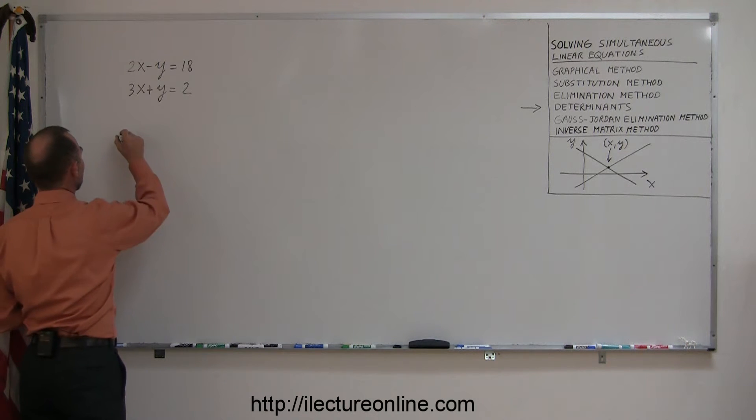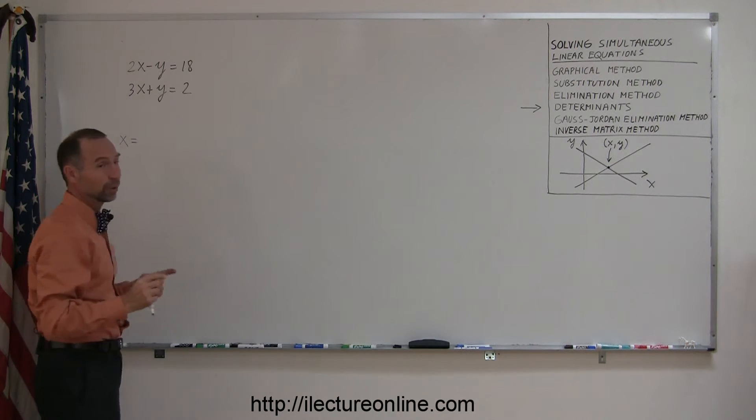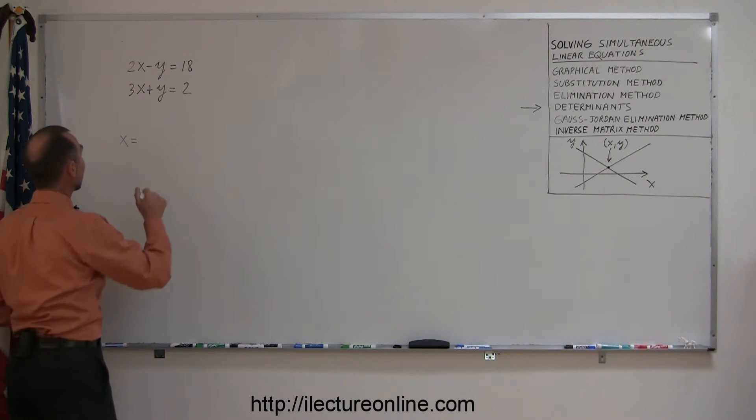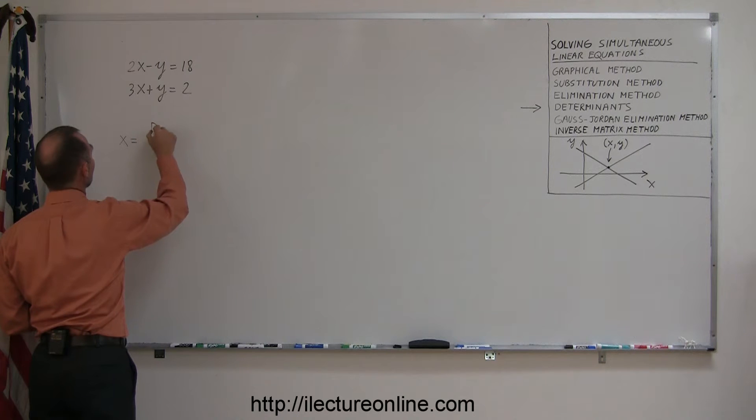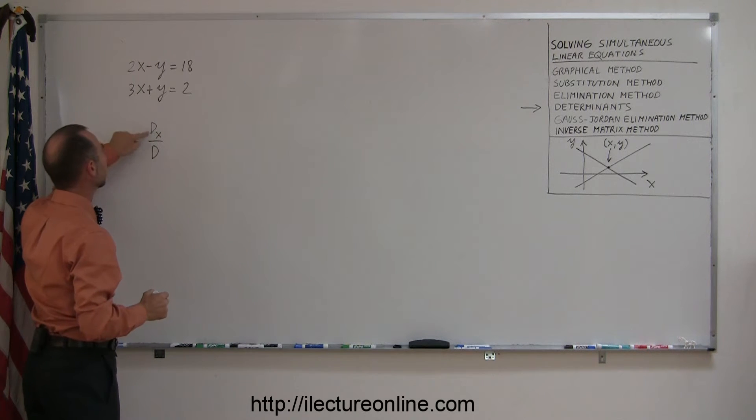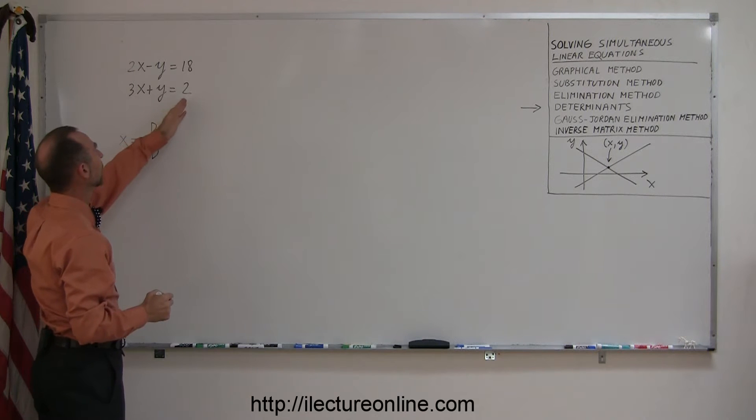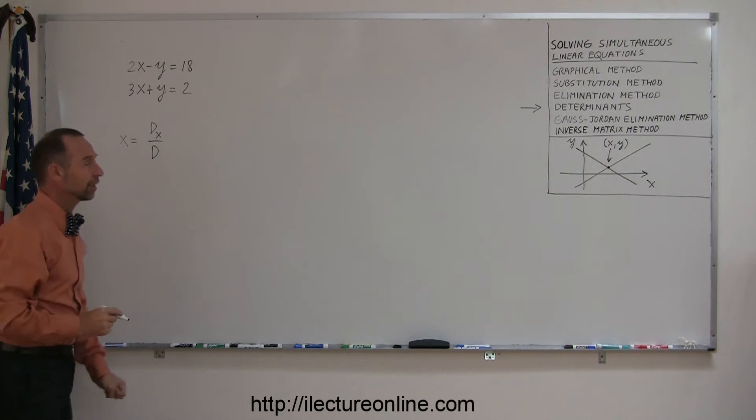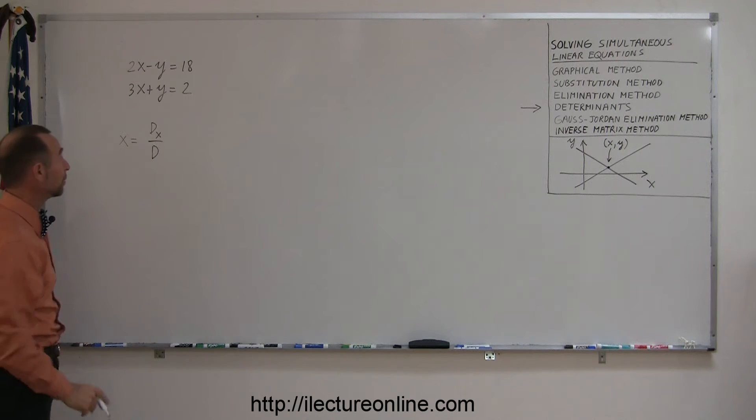Then you have to realize that the x-coordinate of the point where the two lines cross, the solution of the problem, can be found by taking the d sub x and divided by the d. The d is the determinant of this and the d sub x is the determinant with the constants replacing the coefficients in front of the x. And you'll see in just a moment what I mean with that.